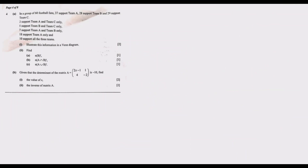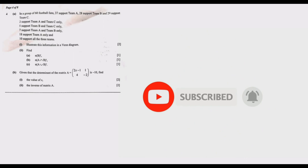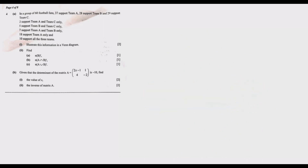Welcome to today's session. We continue looking at the 2021 Grade 12 GCE Mathematics Paper 2. Our question of interest today is Question 4, in this fourth episode — the first three episodes covered questions 1, 2, and 3. Question 4 states: in a group of 60 football fans, 37 support Team A, 28 support Team B, 29 support Team C, 2 support Team A and Team C only, 5 support Team B and Team C only, 7 support Team A and Team B only, 18 support Team A only, and 10 support all three teams. We need to represent this in a Venn diagram.